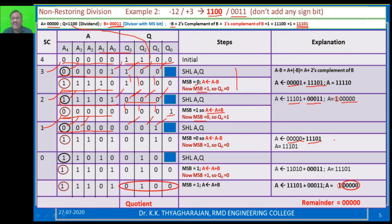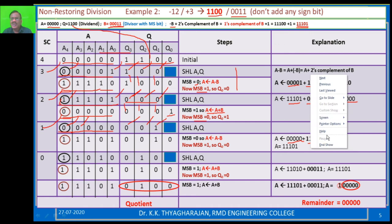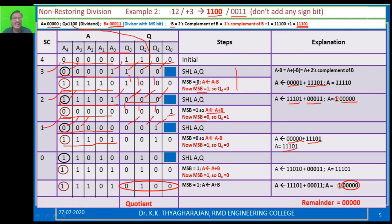You add these two. 0 plus 1 is 1, 0 plus 0 is 0, 0 plus 1 is 1, 1, 1. The result is three 1s, 0, 1 — that is 11101. This value is stored in A. For Q, the bits shift over and the blank position is decided by MSB: since MSB is 1, Q0 is equal to 0. So you put 0 here. This step is also complete.